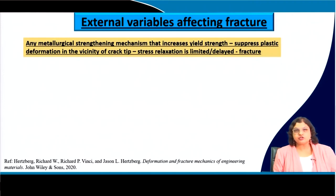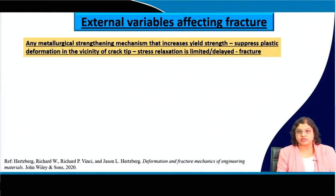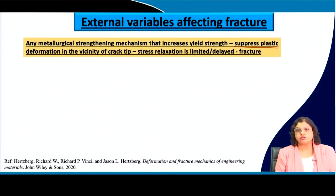We always try to enhance the strength of a material — we look for stronger and stronger material. But by whatever metallurgical strengthening mechanism we use for increasing the yield strength — for example, by having inclusions or precipitates of a second phase with higher hardness and higher strength — we can get an overall enhancement in yield strength. All such strengthening mechanisms actually suppress plastic deformation. Any kind of enhancement in yield strength is associated with retardation in the overall ductility or plastic deformation.